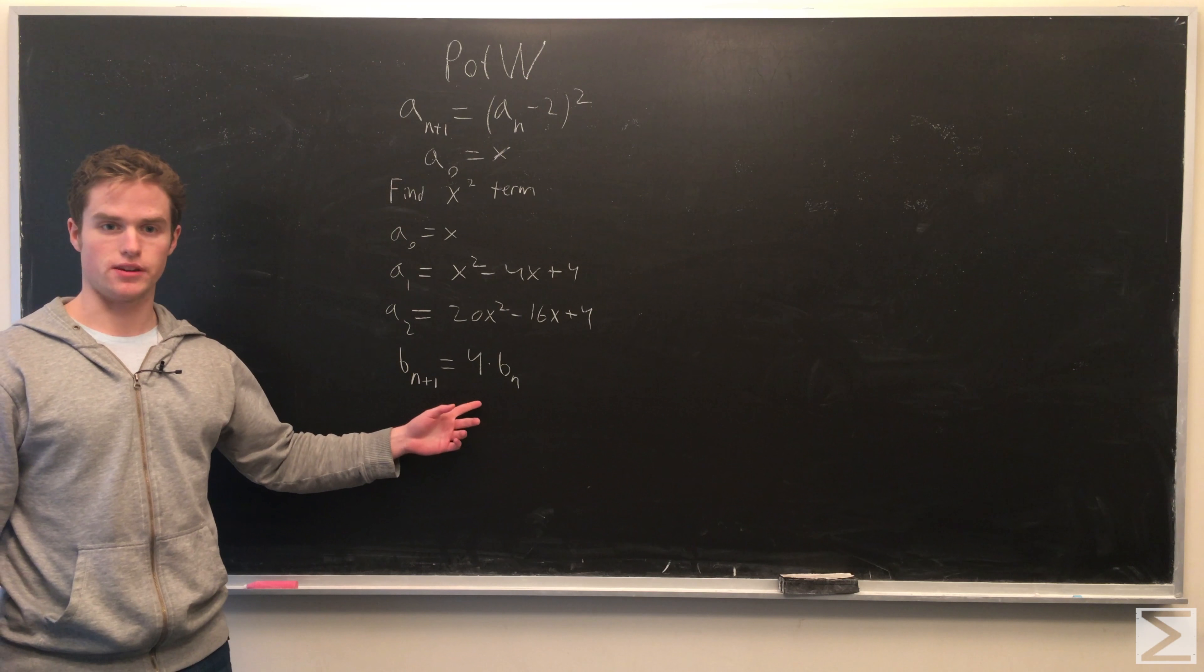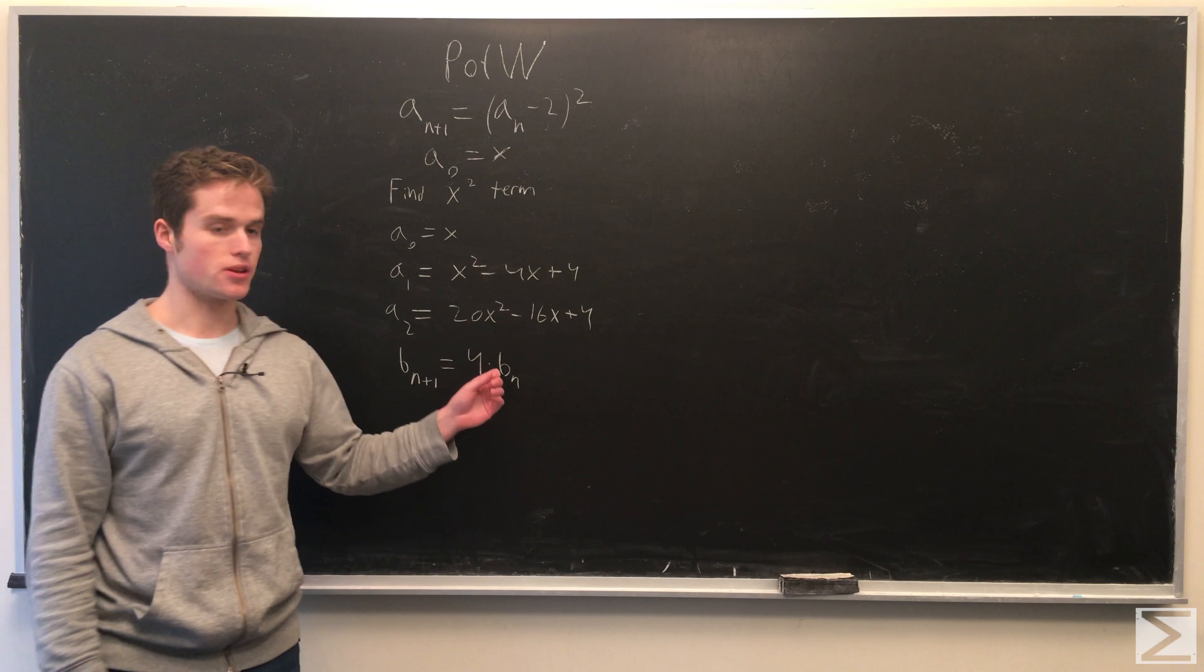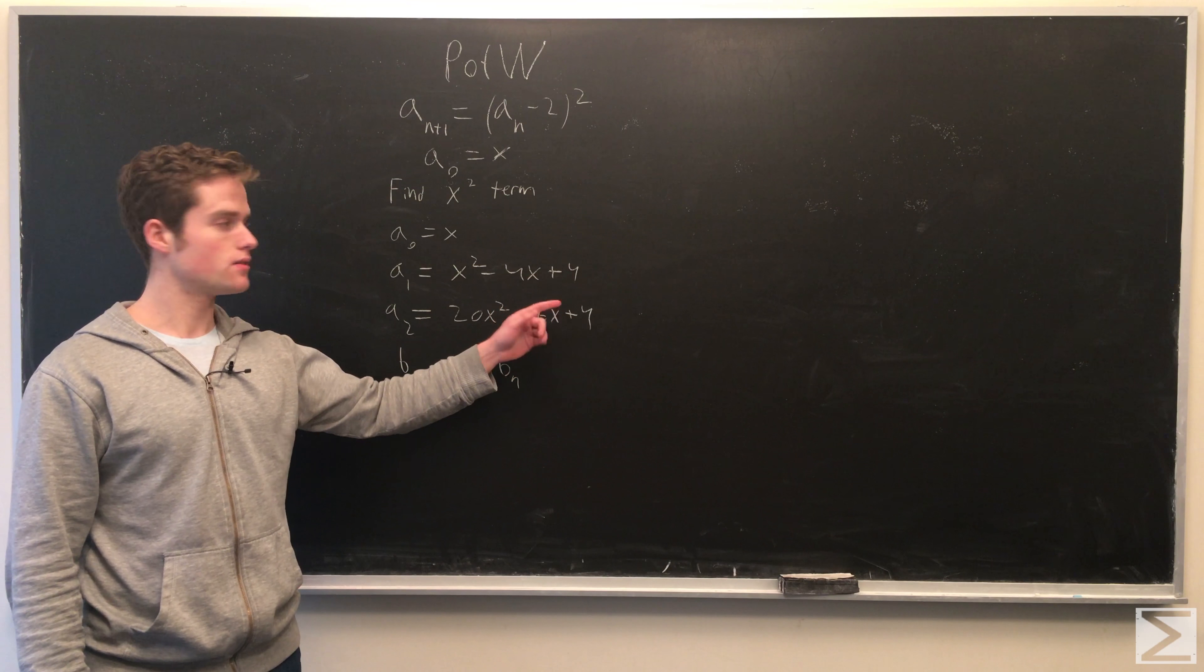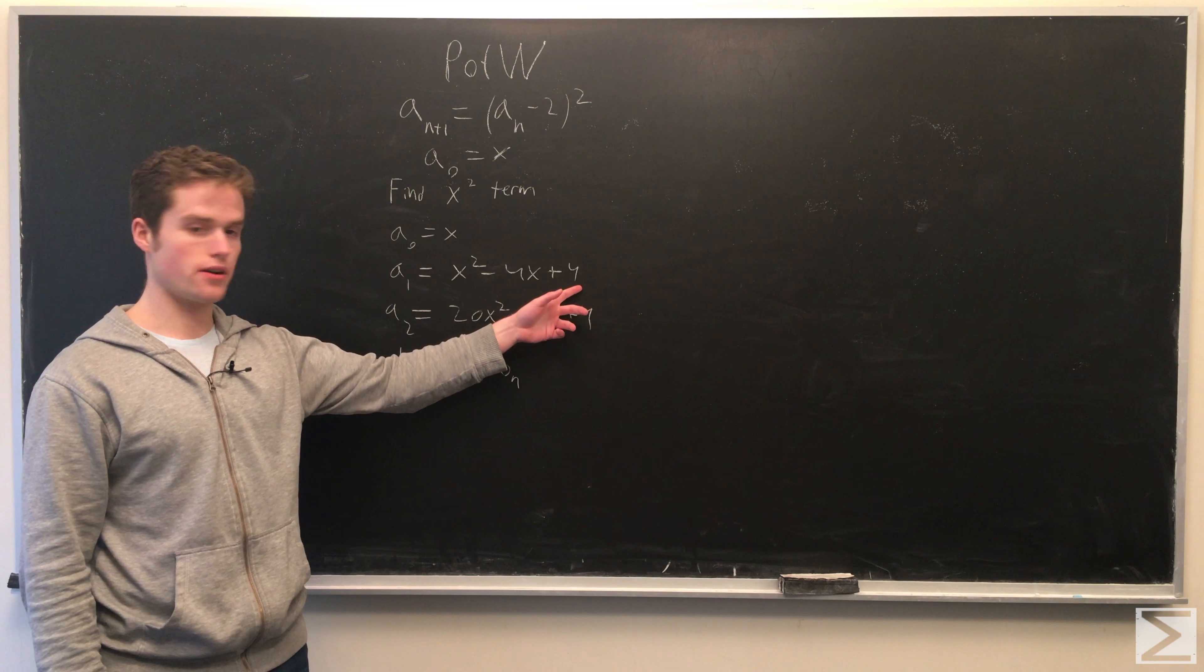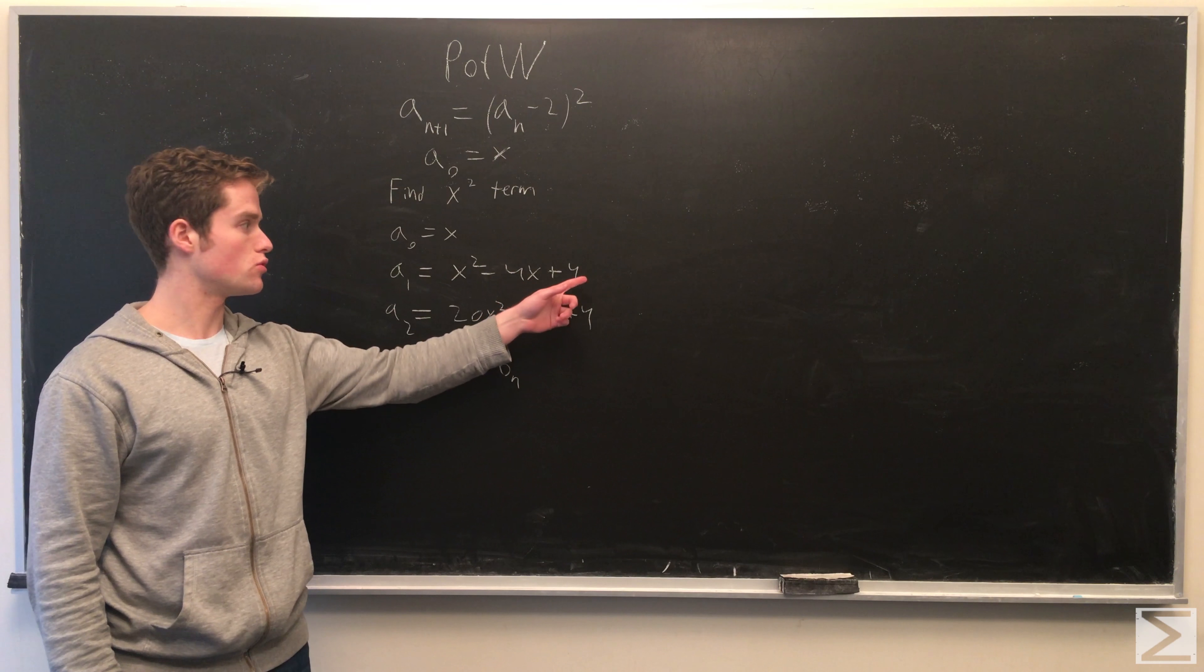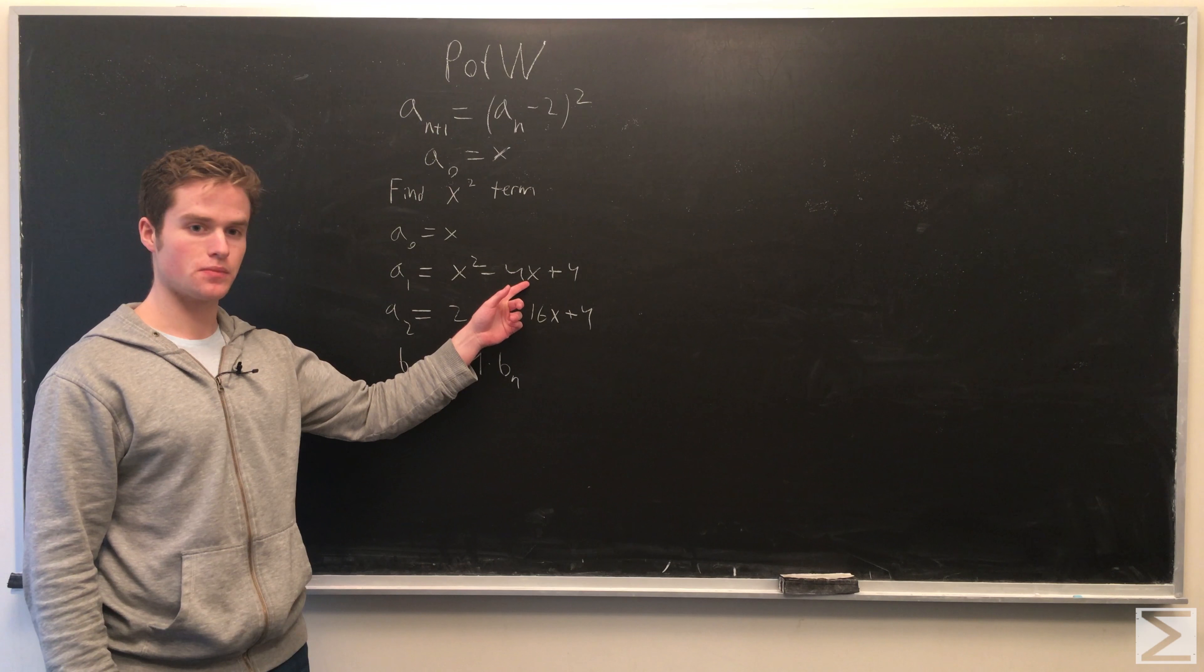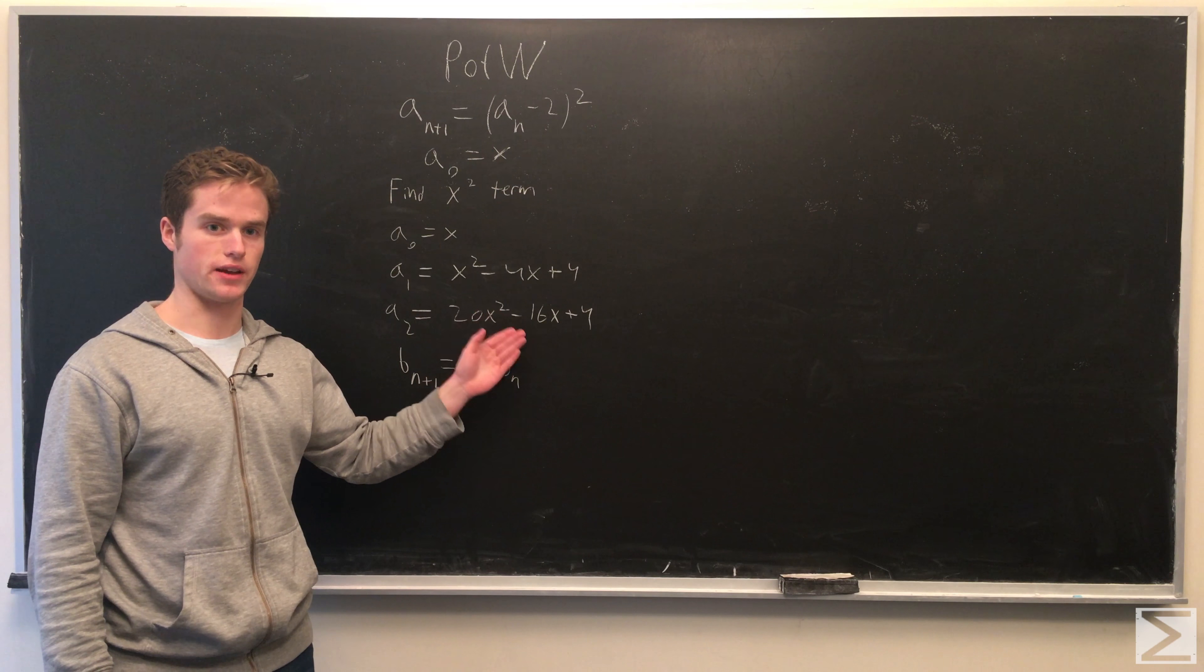We see this recurrence relation will hold true. And we know this holds true because to calculate the coefficient of x, we subtract 2 from the previous term. It gives us a 2 here. And then we square it. And to get the coefficient of x, we have 2 times the previous coefficient of x, plus 2 times the previous coefficient of x, which is just 4 times the previous coefficient of x.